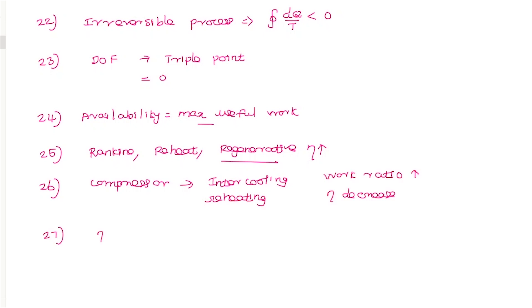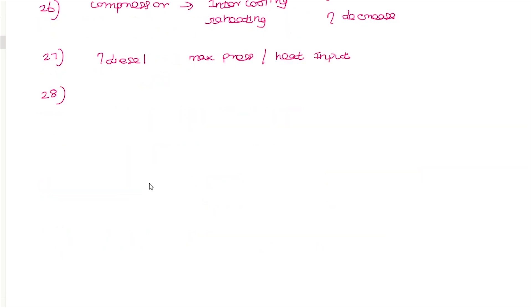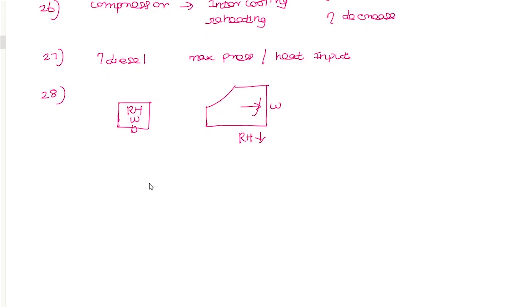The question about diesel cycle: the condition of maximum pressure and constant heat input defines the dual cycle, with comparison to the Otto and diesel cycle efficiencies. The psychrometrics question: when you heat a vessel, specific humidity remains constant, but relative humidity decreases — that is the correct answer.